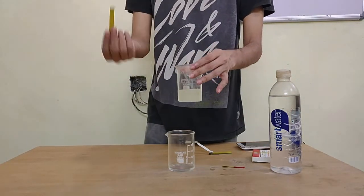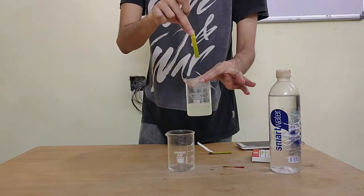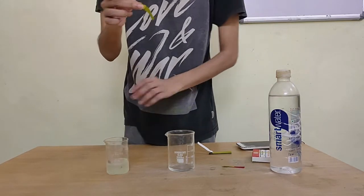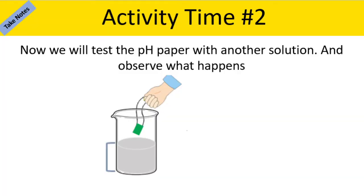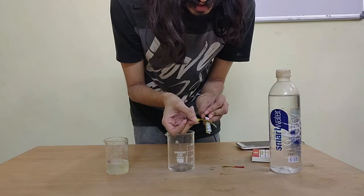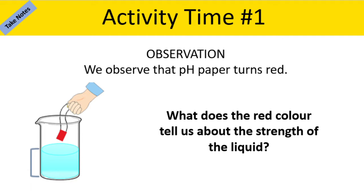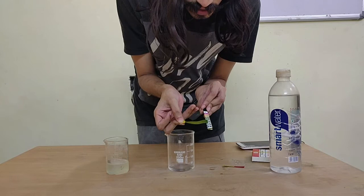I'm going to dip this paper in this solution now, and you can see it's leaking a green color. Again, it's different from the original paper color. I'm going to look at the scale and see which range this is. It's somewhere at an eight or a nine.